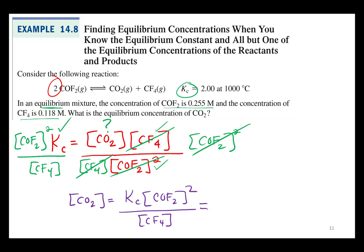Now I'll just say that equals and then start plugging in my numbers. So our equilibrium constant is 2.0 times COF2, which was 0.255 squared, all over CF4, 0.118.